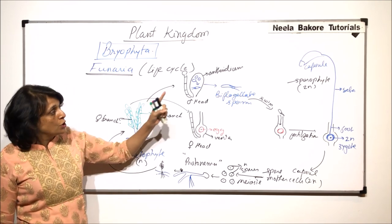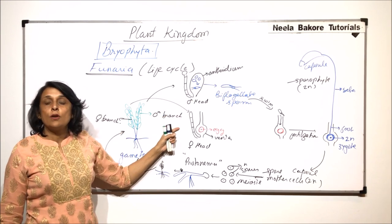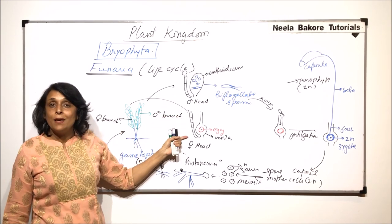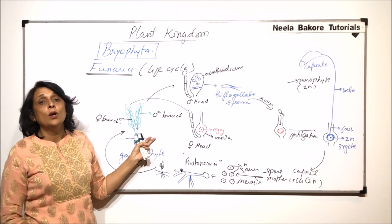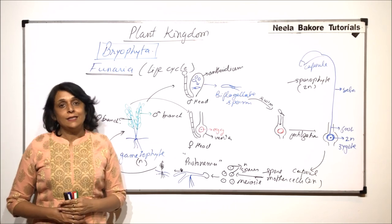Gametophytic stage is haploid. Sporophytic stage is diploid. And the detailed structure of the male reproductive structures and the female one that we have already seen. So to sum up, this is how the complete life cycle in case of Funaria takes place.